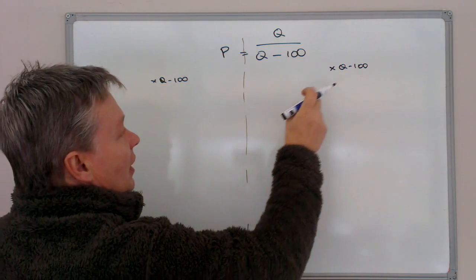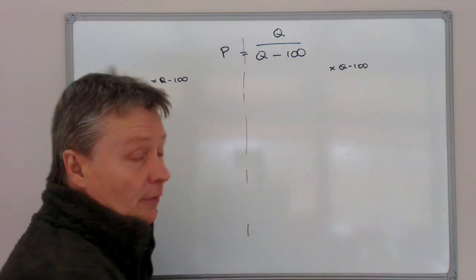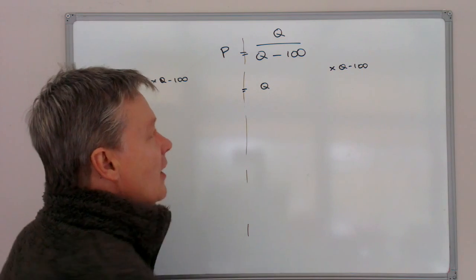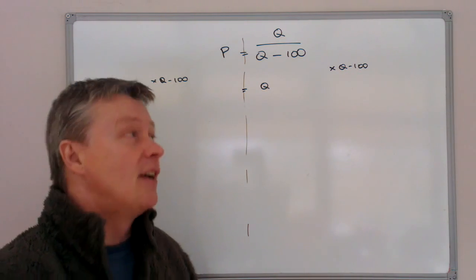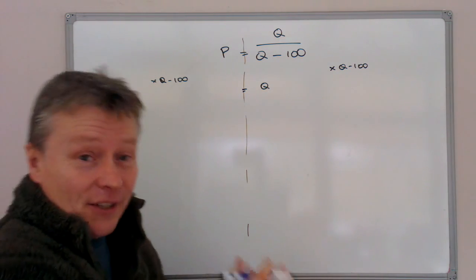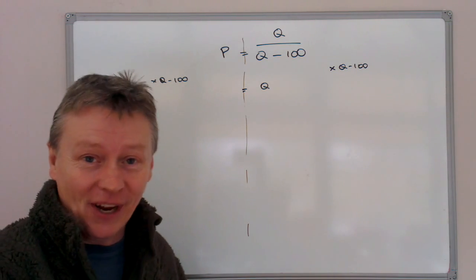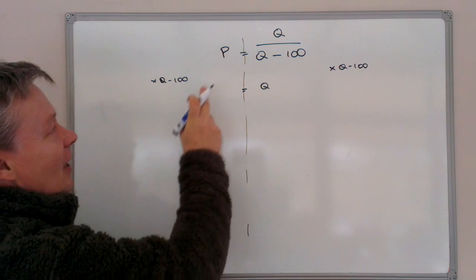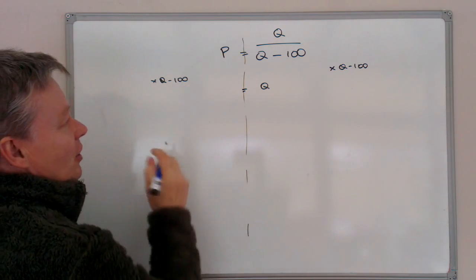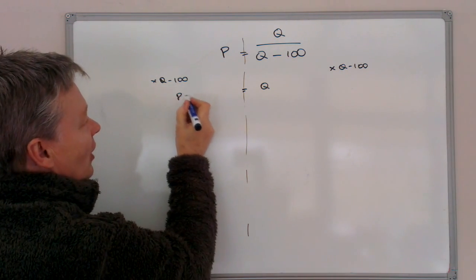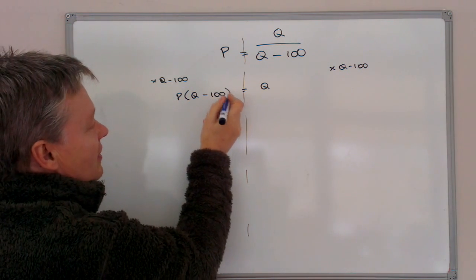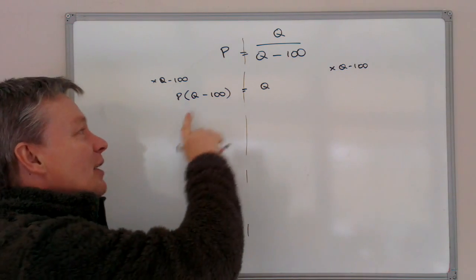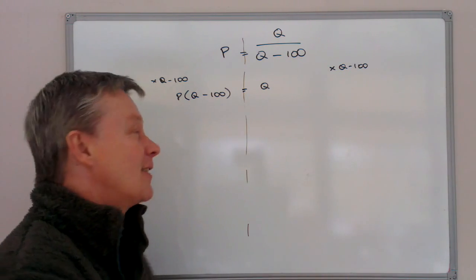And on this side, because I've got a division and a multiplication, it cancels each other out. So on this side, that's great. I've just got a single value of Q. Now if it was that straightforward, I would have answered the question. However, the problem is that on this side, I'm multiplying P times Q minus 100. And that's okay, except I've got a value of Q in there. And really, I need my Q's on this side.